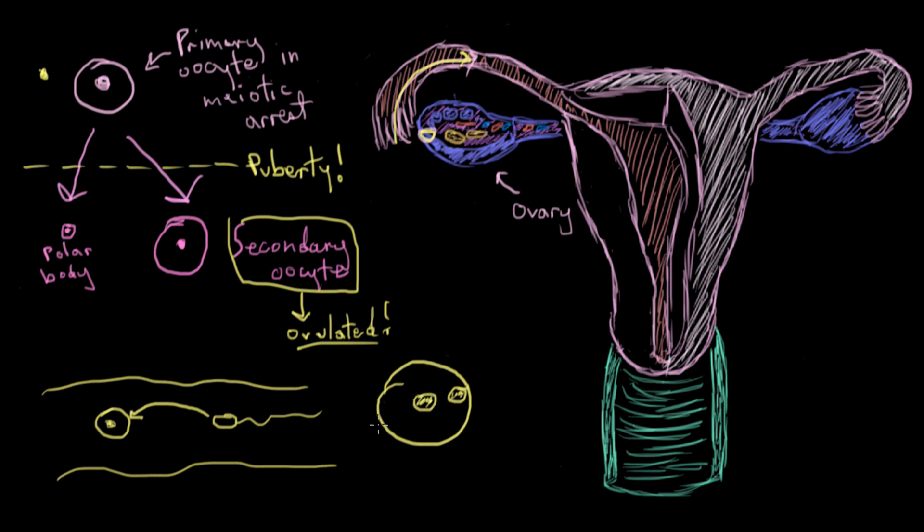Well, this is when meiosis two happens. So the second half of meiosis. So as the sperm nucleus is traveling toward the egg nucleus to create a joint nucleus, meiosis two occurs, and the oocyte reduces its chromosome copy number by creating another polar body.